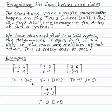The trace is minus seven, the determinant is zero. This makes it an equilibrium line case, and since the trace is minus seven, it's on the sink side—equilibrium line sink.